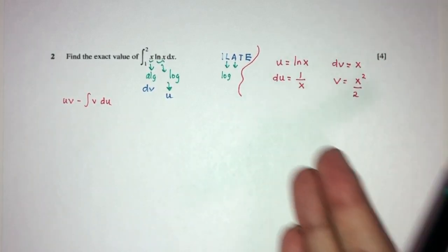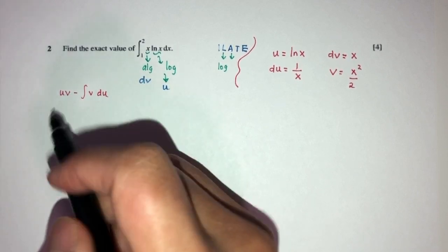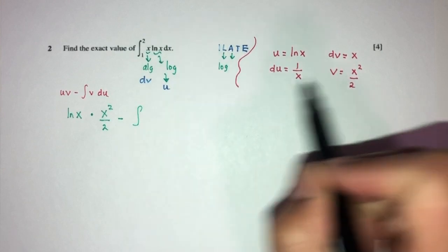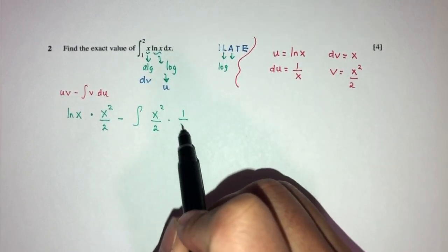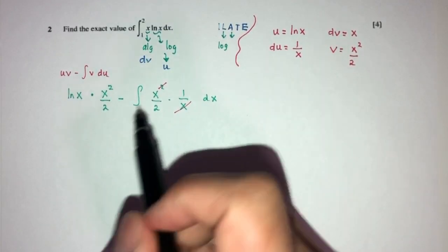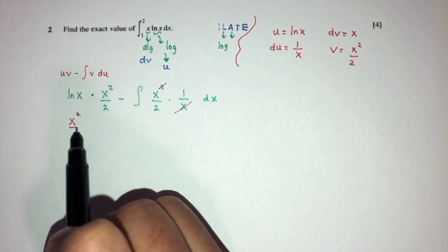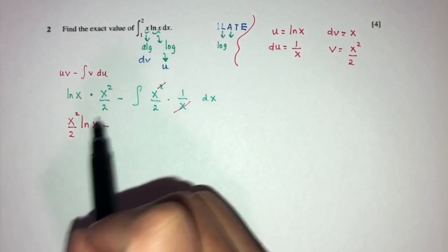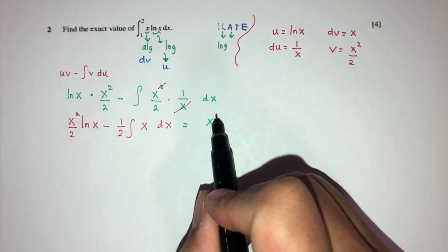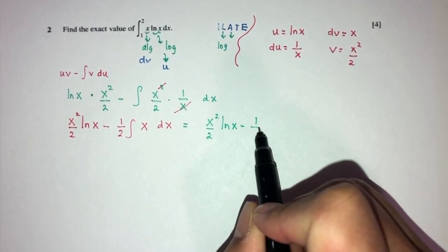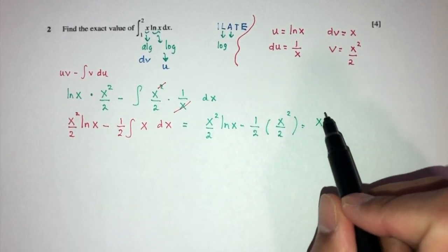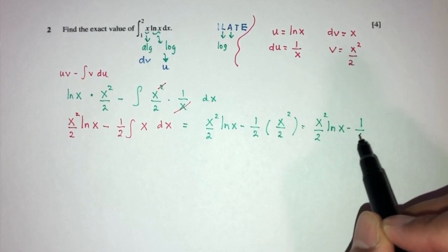Now we just replace back into the integration by parts formula. u is ln(x), multiplied by v which is x squared over 2, minus the integral of v (x squared over 2) times du (1 over x), dx. Simplifying — the x cancels — so we have x squared over 2 times ln(x), minus a half times the integral of x dx. That gives x squared over 2 · ln(x) minus half times x squared over 2, which simplifies to x squared over 2 · ln(x) minus x squared over 4.